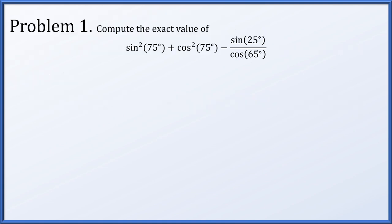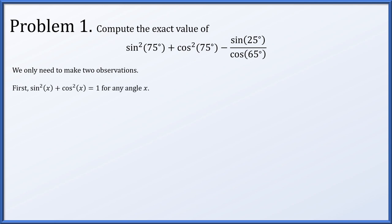In problem one, we'll compute the exact value of sine squared of 75 degrees plus cosine squared of 75 degrees minus sine of 25 degrees divided by cosine of 65 degrees. We really only need to make two observations to complete this problem. First, sine squared x plus cosine squared x equals one for any angle x. This is called the Pythagorean identity.